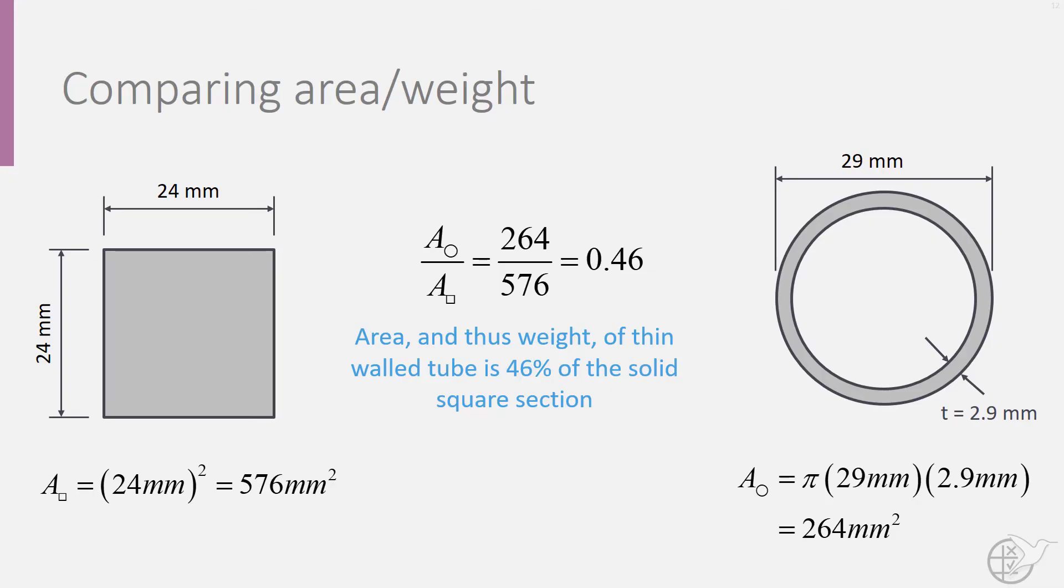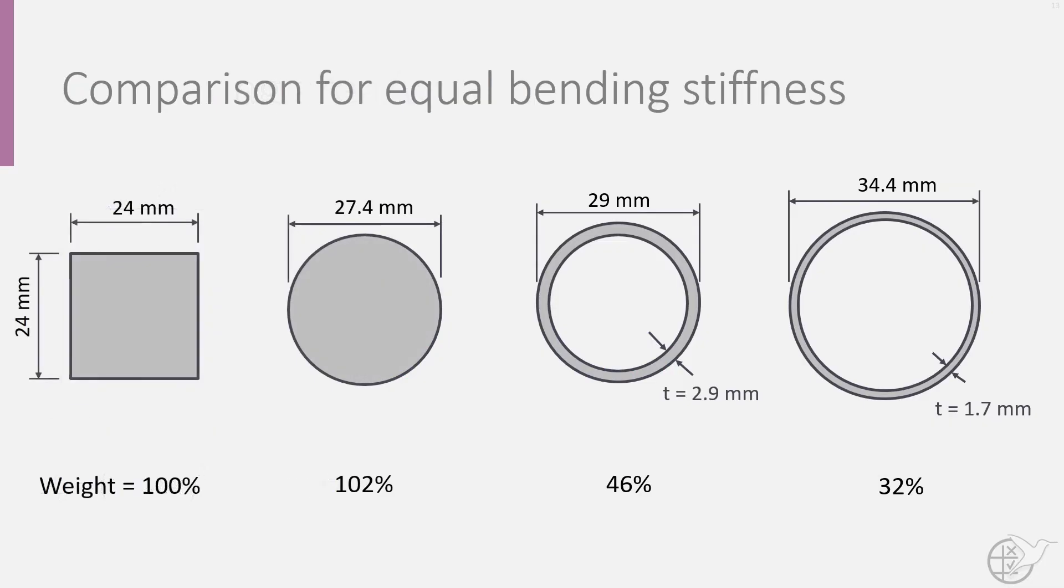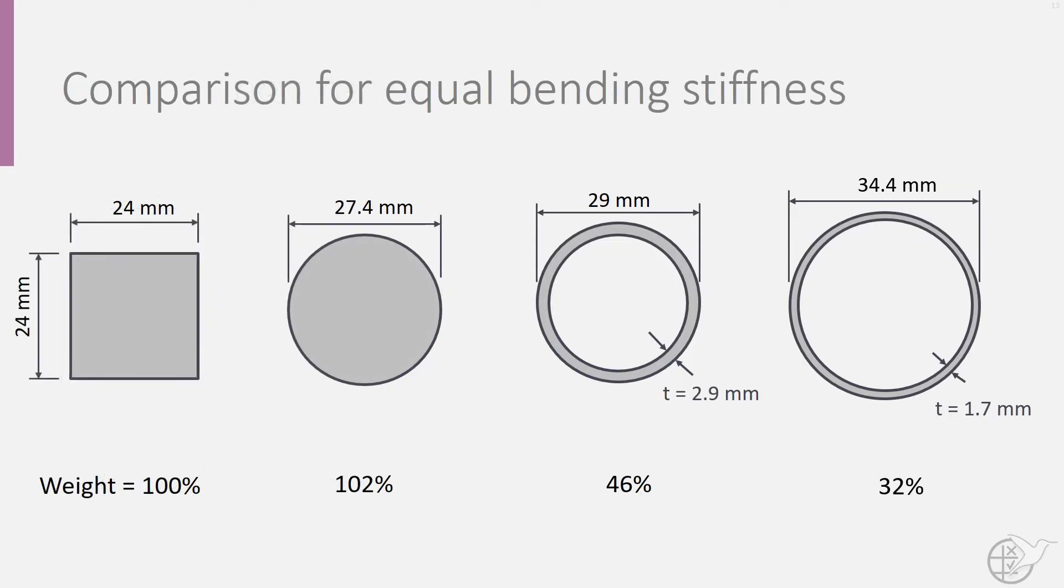Similarly, for a thin walled tube with a thickness equal to 5% of the diameter, we get a diameter of 34.4 mm and a weight that is only 32.4% of that of the square section.